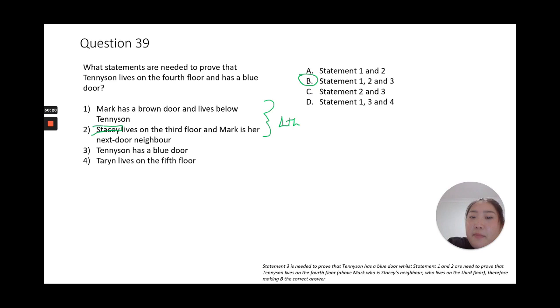And Mark lives below Tennyson, so that means that Tennyson must live one floor above, so fourth floor. And the third statement will tell you that he has a blue door - it just says straight away. So you need both of them to prove that he lives on the fourth floor and has a blue door.